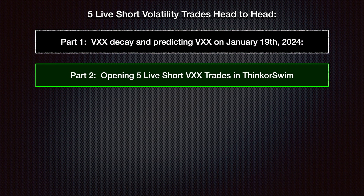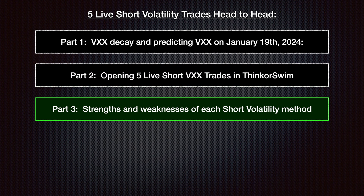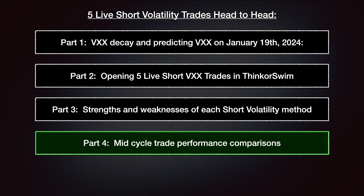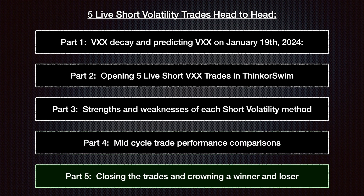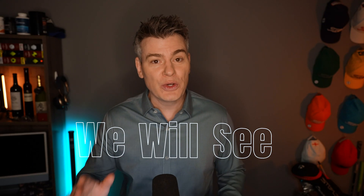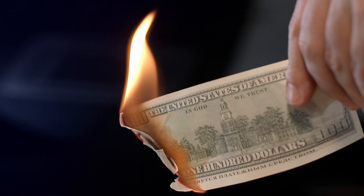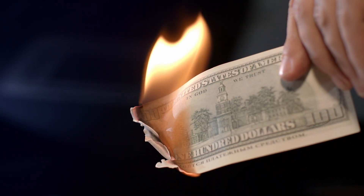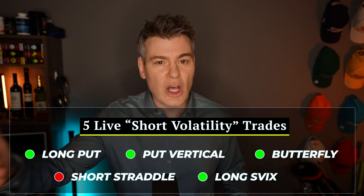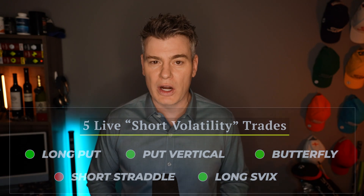In part two I'll actually go into thinkorswim and execute all five trades live and scale them to the same amount of capital. Part three will highlight the main strengths and weaknesses of each short volatility method. Part four will do an update after a few months of action to see which ones are better and why. And then in part five we'll wrap it up and crown a winner and a loser. This is all live, so I don't know what the result is going to be — maybe all five make money, maybe the stock market crashes and they all lose. Either way, we're going to learn a lot about how each short volatility method works.